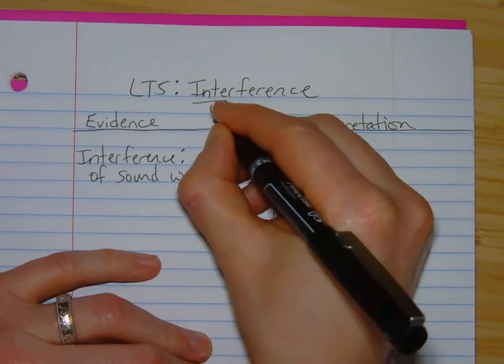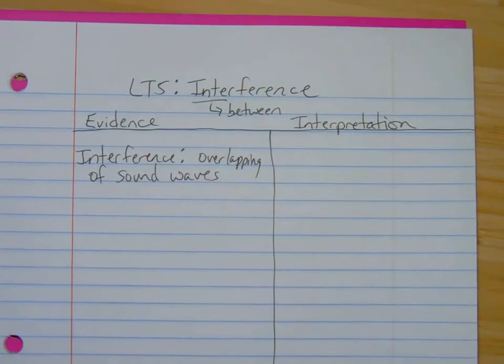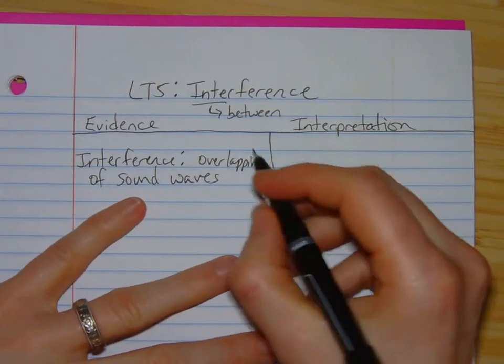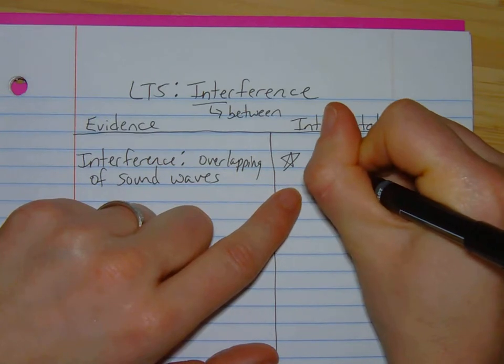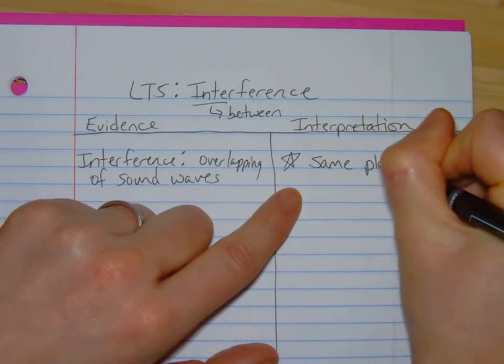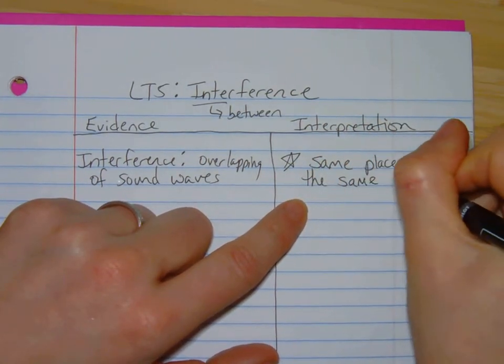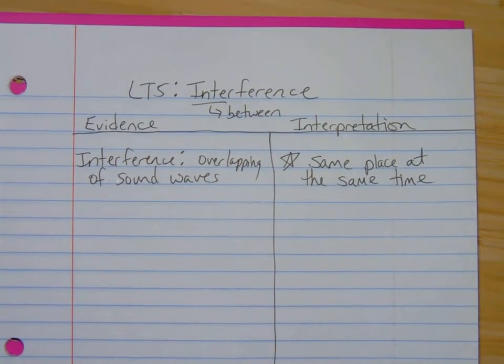The prefix inter means to come between something. So think about if somebody interrupts your conversation. As annoying as that is, that means they came between you and the other person. If somebody is interfering in your life, they are right there. They are causing difficulties because of their presence. So to overlap, it is really important - this gets missed a lot - that we know those sound waves must be in the same place at the same time. That is the only way we can have interference.